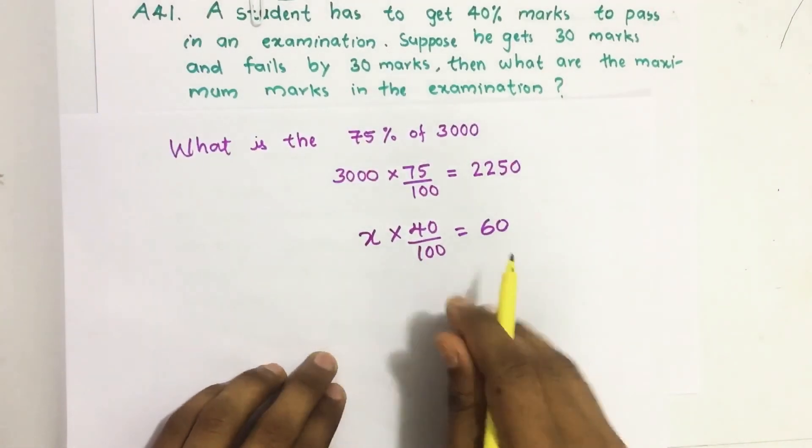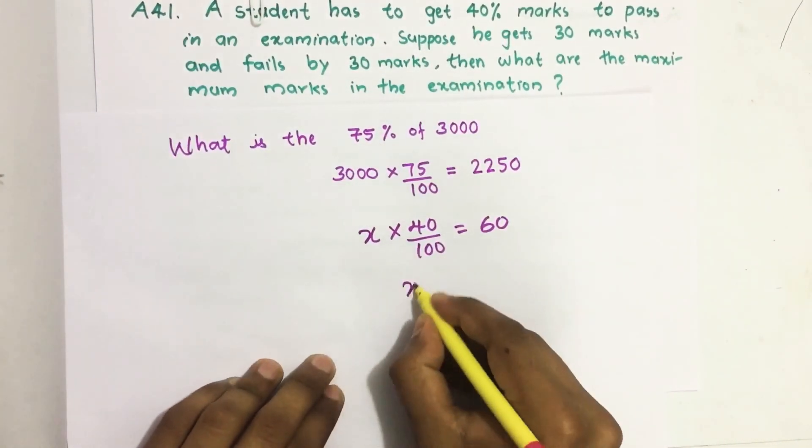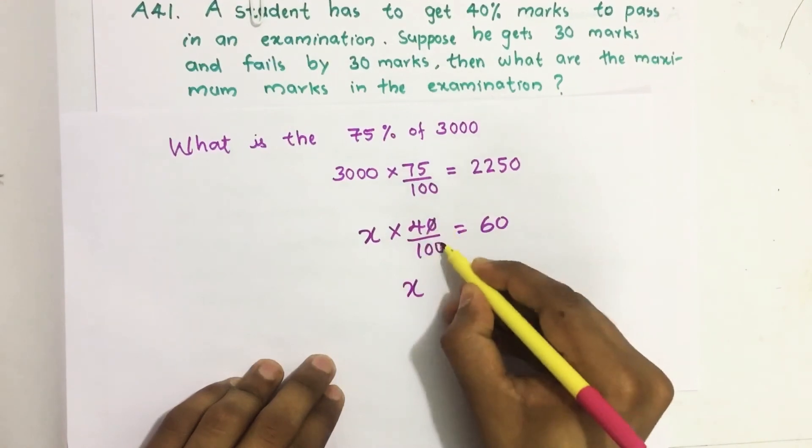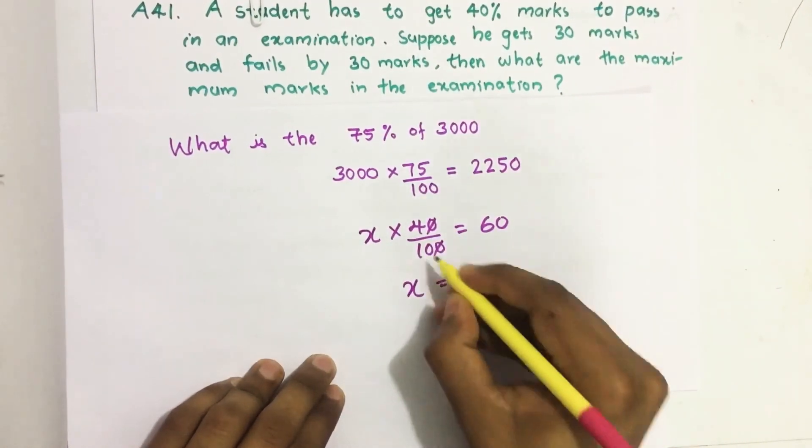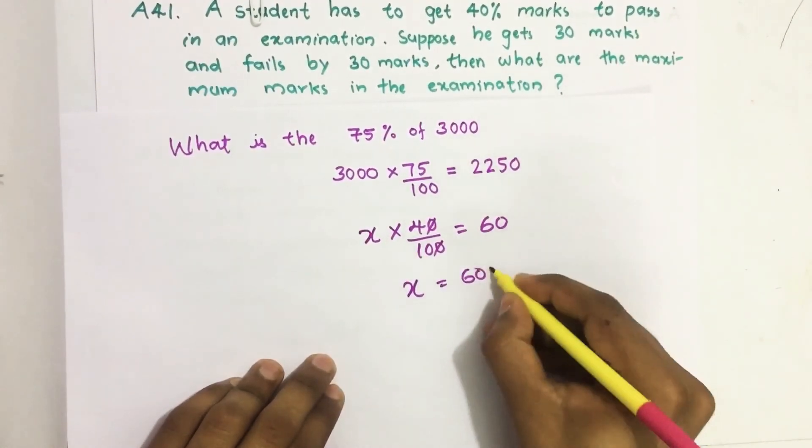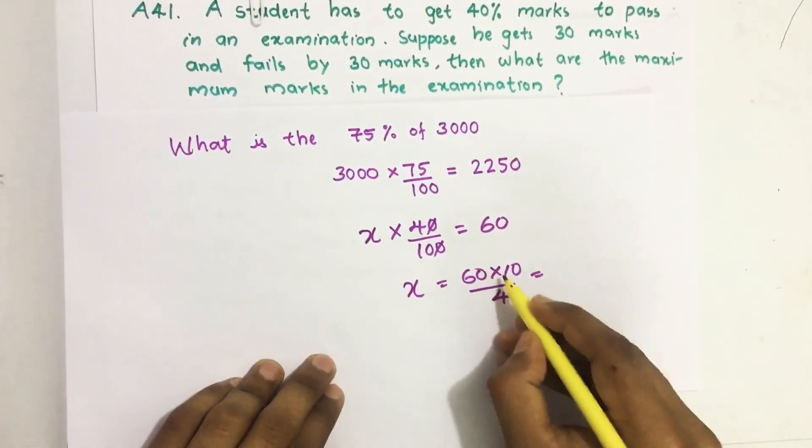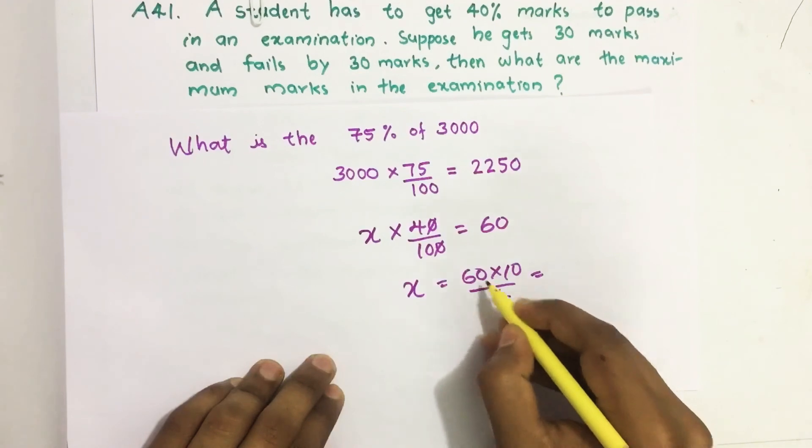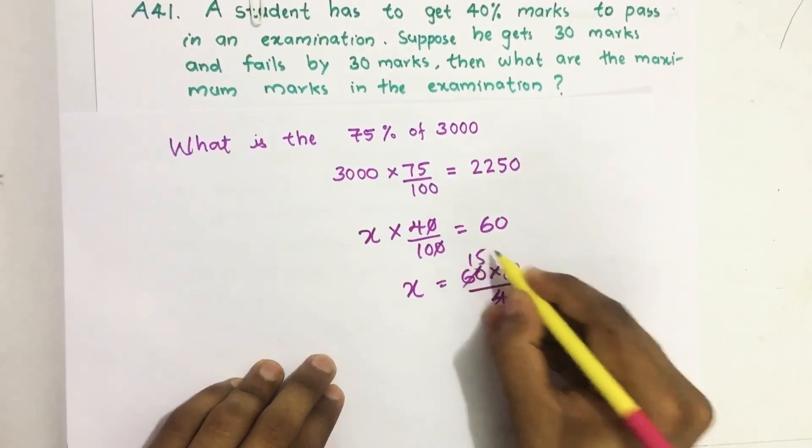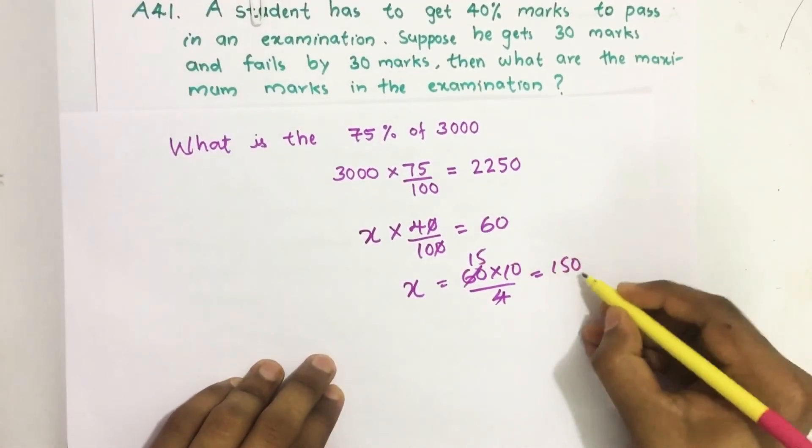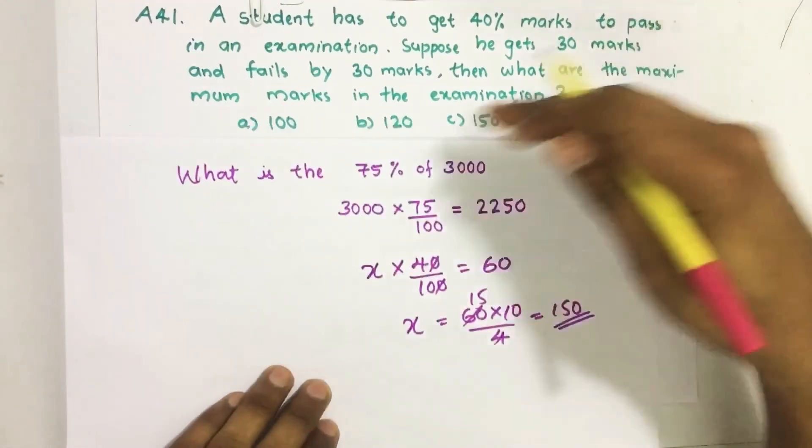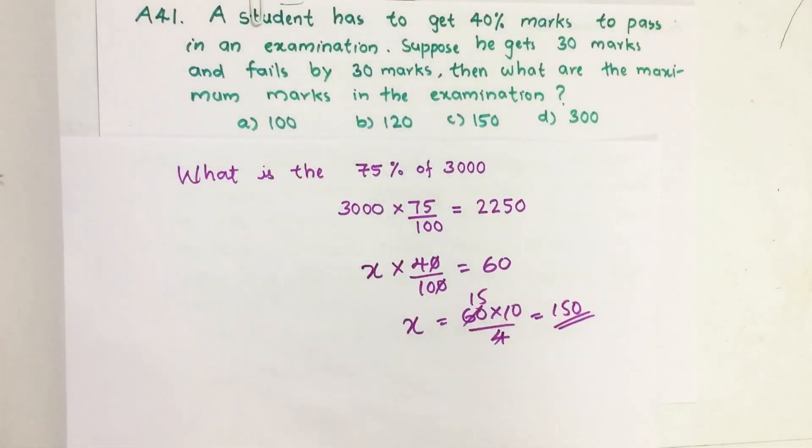So by simplifying this, X equal to, we take this 100 here and 4 here, 4 by 15 or 60. So here it is 15, we get 150. 150 marks is the maximum marks in that examination.